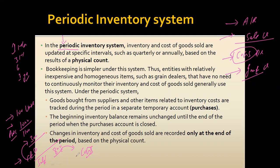In the periodic system, goods bought from suppliers and other inventory-related costs are tracked during the period in a separate temporary account called Purchases. The beginning inventory balance remains unchanged throughout the period. Changes in inventory and cost of goods sold are recorded only at the end of the period, based on a physical count. Only when the physical count is performed can we record cost of goods sold and adjust the opening stock.